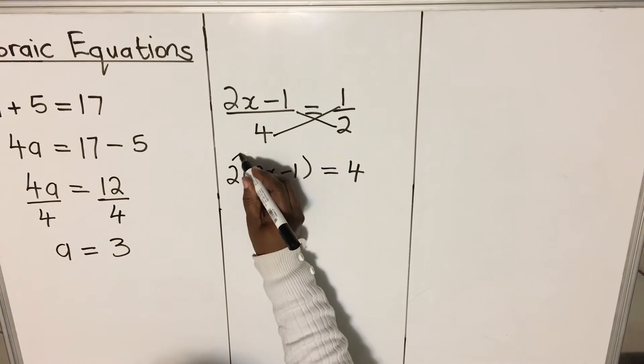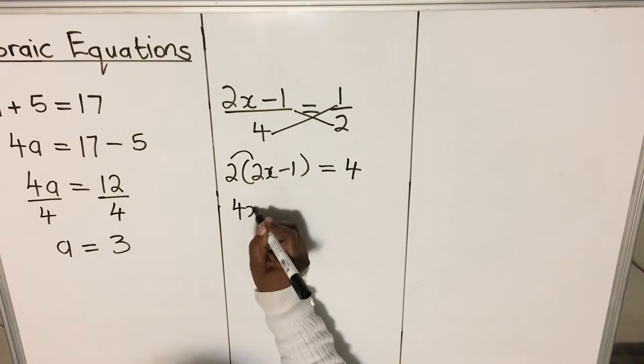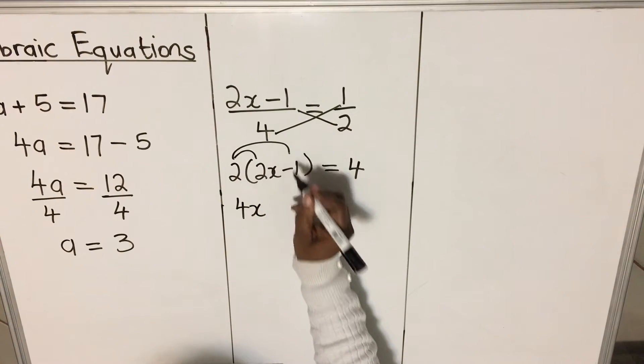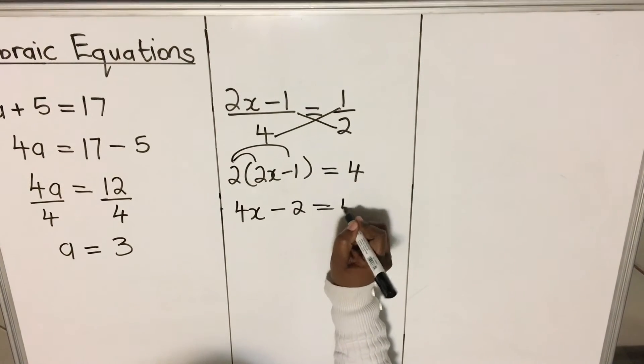Then we multiply. 2 times 2x is 4x. 2 times minus 1 minus 2 is equals to 4.